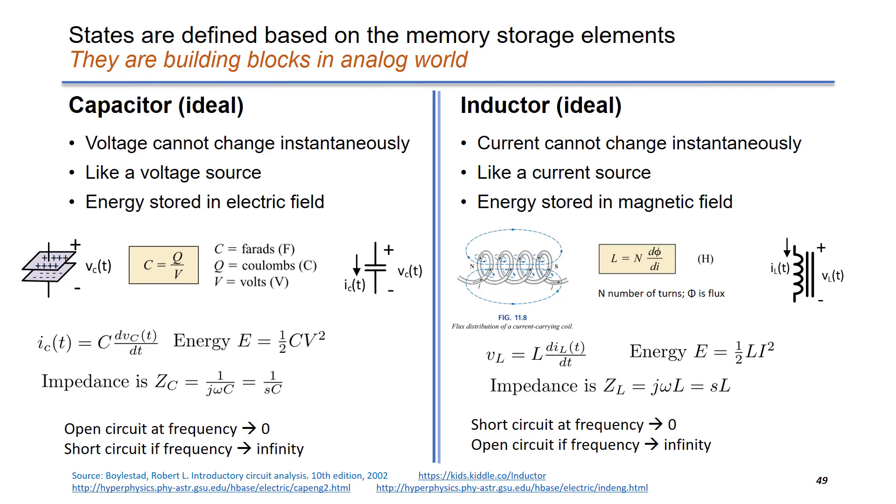Inductor voltage VL equals to L times dI over dT. If you have a higher current change rate, you expect to see higher voltage over your inductor. The energy saved in inductor is given in this equation.